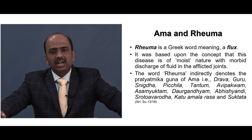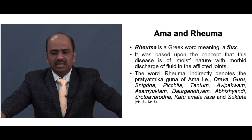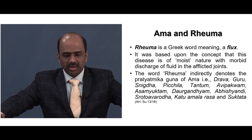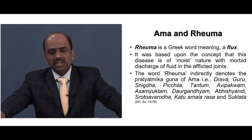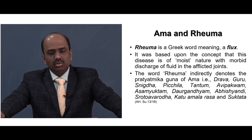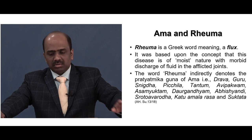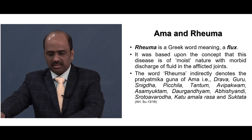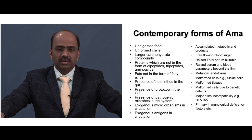The word Rheuma indirectly denotes the Pratyatmak guna of Ama: Drava, Guru, Snigda, Picchila, Tantum, Abhipakvam, Asamyuktam, Daurgandiyam, Abishyandis, Rotavarodha, Katu Amlarasa, and Suktata. This is how Ama and Rheuma are similar in their presentation.